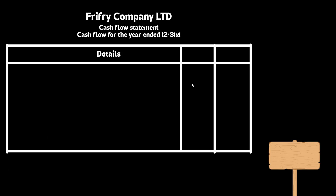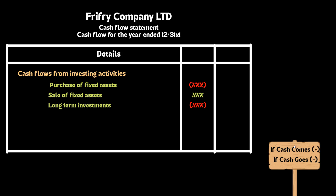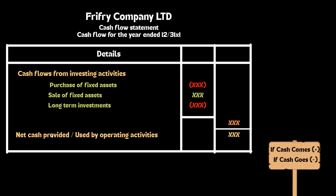Now, cash flow from investing activities. Only three items will affect here. The first one is the purchase of a fixed asset. The second one is the sale of fixed assets. The third one is any long-term investment. You have to remember that in investing activity, if cash comes in you need to add that number here, and if cash goes out then you have to deduct the number. By this you will get a balance — if the balance is negative, we will call that net cash used by investing activity. And if we get a positive balance then that will be net cash provided by investing activity.